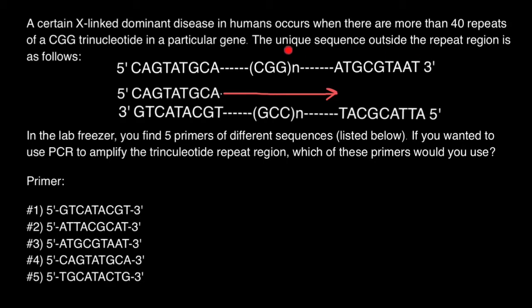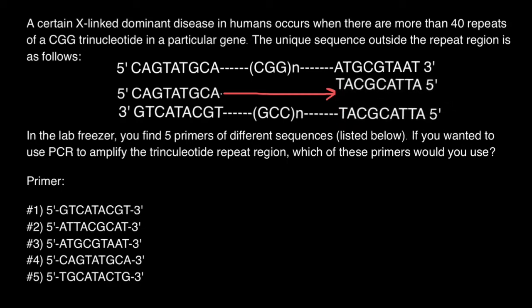What does the primer need to be in order to make a complementary strand for the other strand of DNA? As you remember, DNA polymerase can only extend a primer in the 5' to 3' direction. That means this sequence is going to be the same as the sequence of the primer, because it will be complementary to the top strand. This is the exact sequence of the primer we need to extend in this direction — we call this the reverse primer.